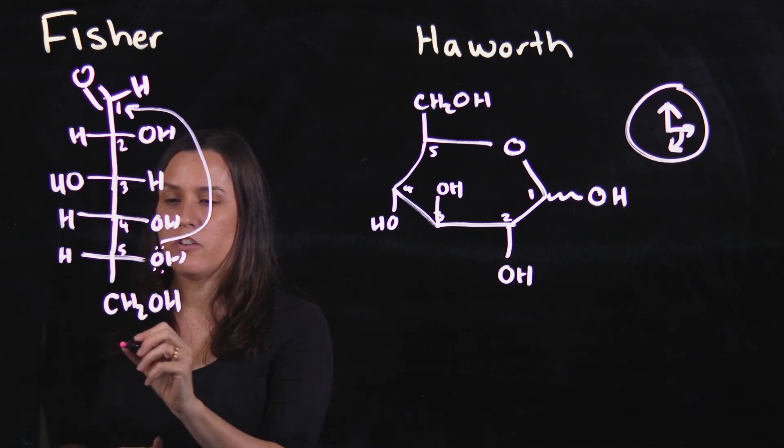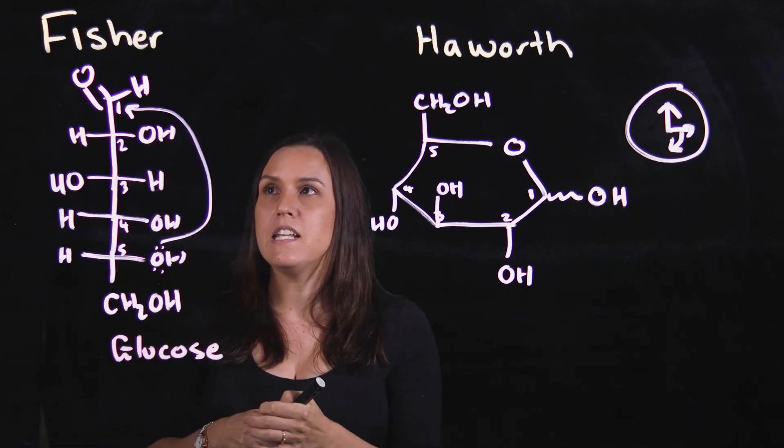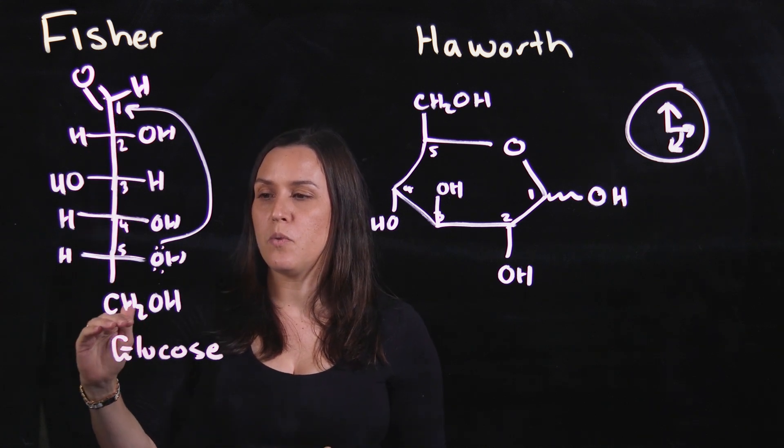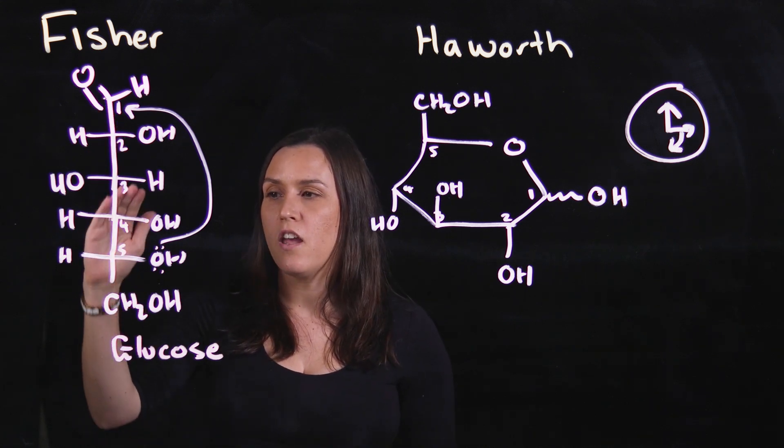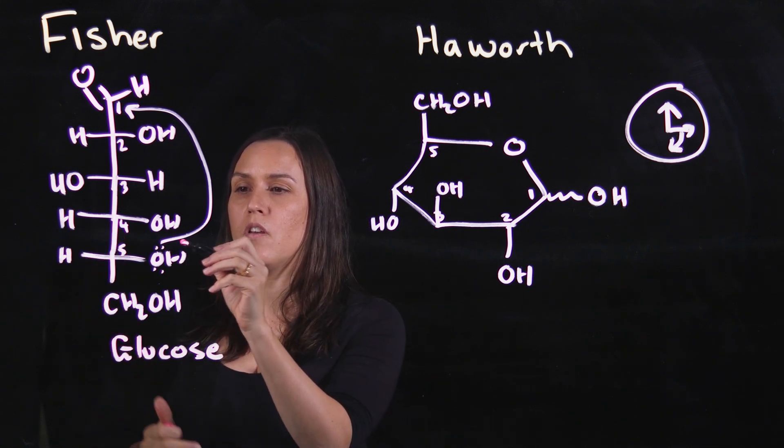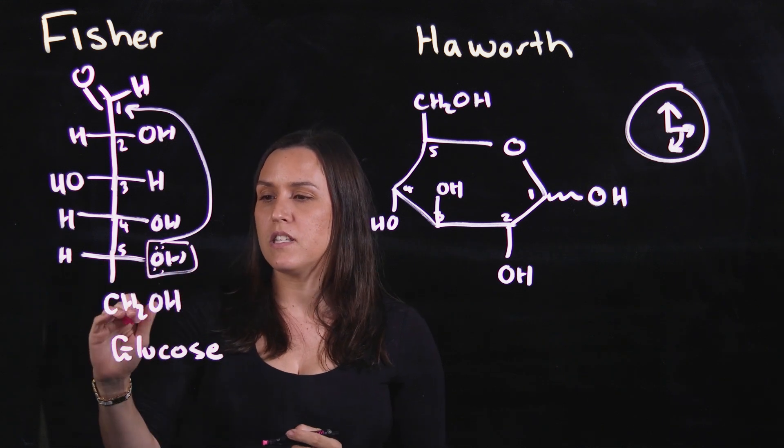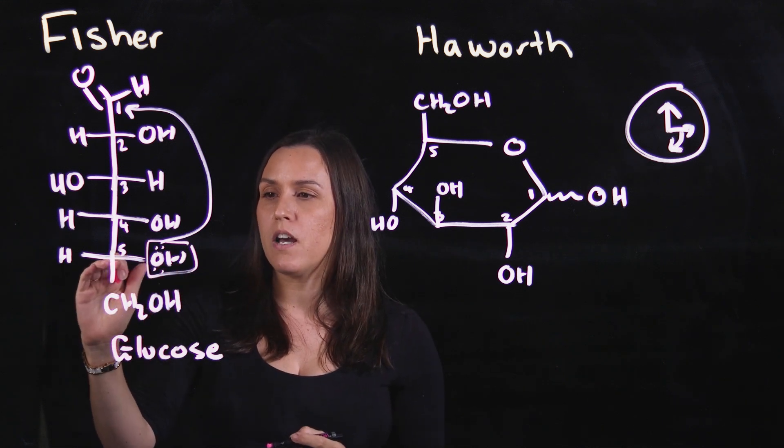This carbohydrate here is glucose. In the Fischer projection, you want to have the CH2OH at the bottom, and then look at the OH that's one carbon up and see what side it is on. We've got the CH2OH at the bottom, one carbon up.